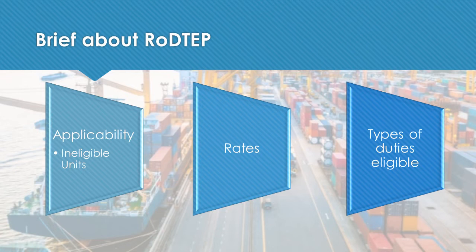As the scheme name suggests, it covers remission of duties and taxes — every duty, tax, and levy of central, state, and local governments that are incurred for the purpose of export of goods. Examples of eligible duties include excise duty on fuel used in transportation, electricity duty, municipal tax, property tax, and uncreditable GST inputs under Section 17(5), including food, beverages, and works contract — all uncreditable GST amounts are examples where duties can be remitted under this scheme.